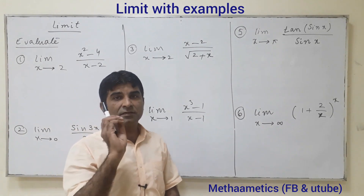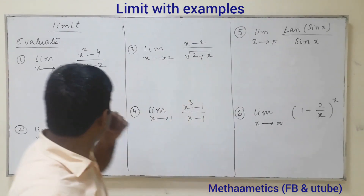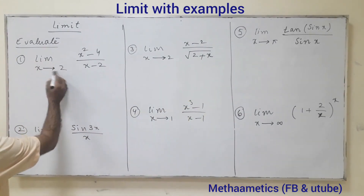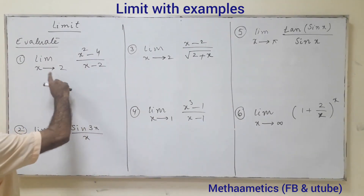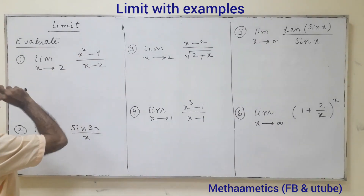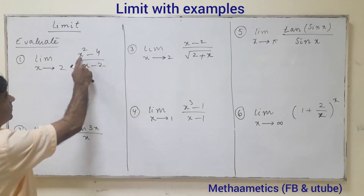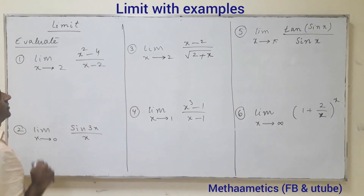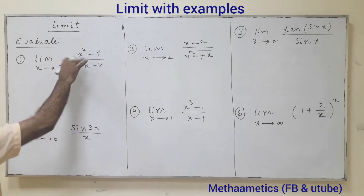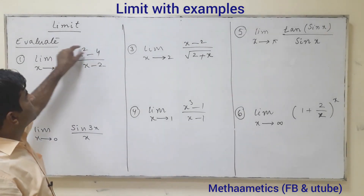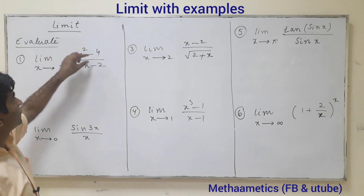We have already discussed that when x approaches 2, it does not mean x is actually 2 — its meaning is that the value of x approaches 2. If we put the direct value 2, we will get 0 over 0, which is indeterminate. We have to try a different way — we can find its factors: x minus 2 and x plus 2.